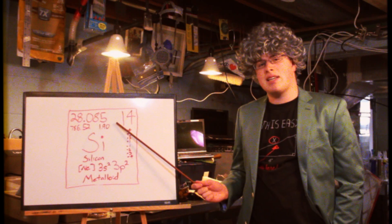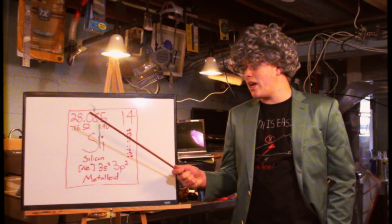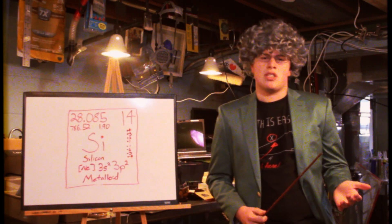It is the 14th element in the periodic table of elements and it has an atomic weight of 28. Silicon is a crystalline structure.